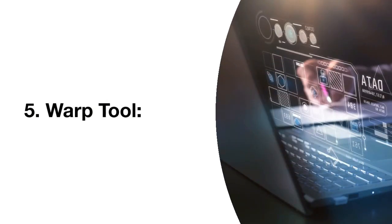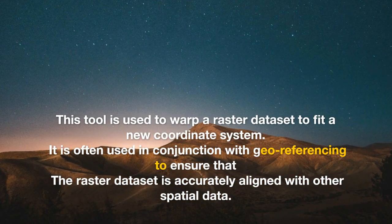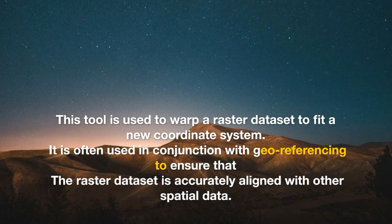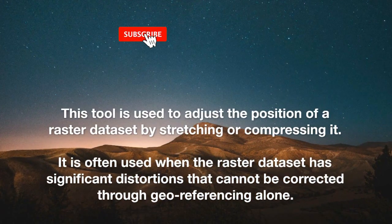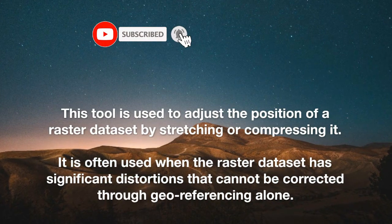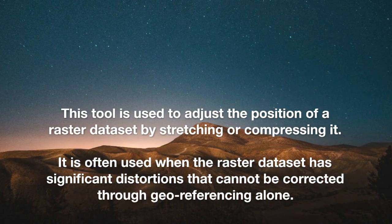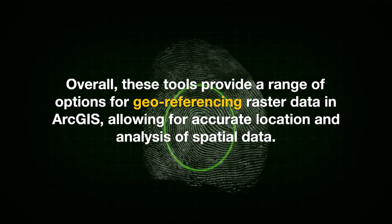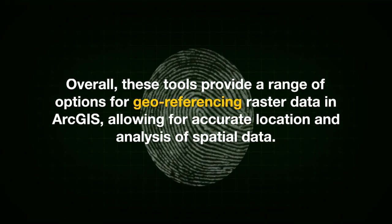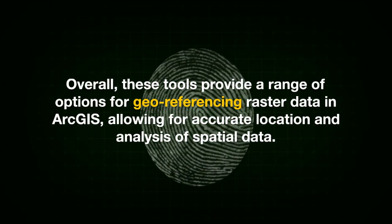5. Warp Tool — this tool is used to warp a raster dataset to fit a new coordinate system. It is often used in conjunction with georeferencing to ensure that the raster dataset is accurately aligned with other spatial data. 6. Rubber Sheeting — this tool is used to adjust the position of a raster dataset by stretching or compressing it. It is often used when the raster dataset has significant distortions that cannot be corrected through georeferencing alone. Overall, these tools provide a range of options for georeferencing raster data in ArcGIS, allowing for accurate location and analysis of spatial data.